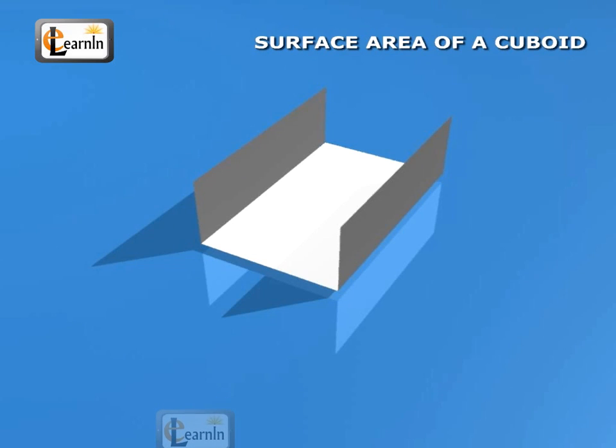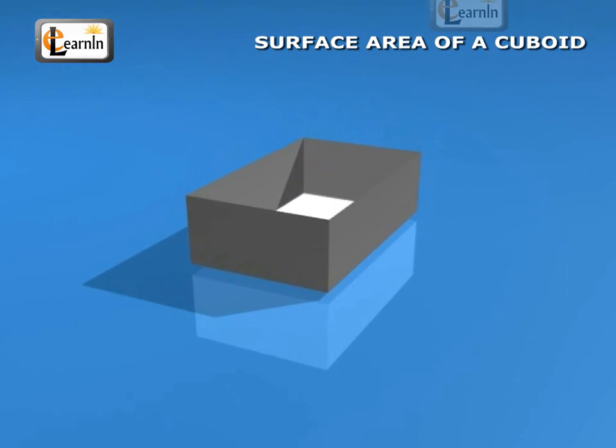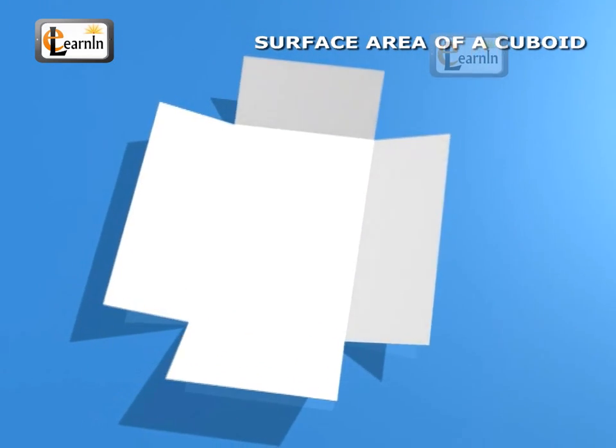Now, to cover the front and the back ends, we would need two more rectangular pieces of a different size. This figure, when opened out, would look like this.